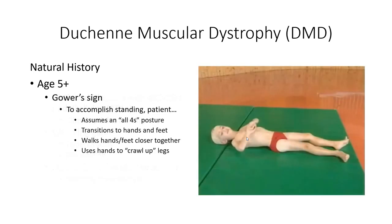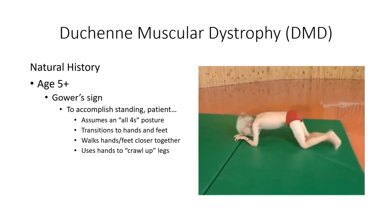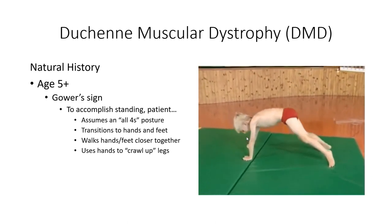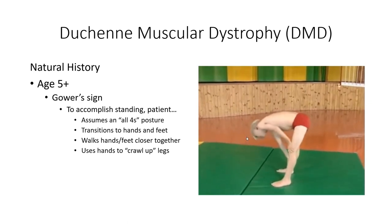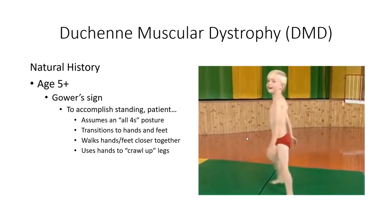As weakness progresses, patients will develop characteristic strategies to compensate for strength loss. For example, a common strategy has been observed to transition from a lying to standing position, and is referred to as Gower's sign. Starting from a supine position, patients will roll to a prone position and transition to their hands and knees. Using their hands to stabilize their base, the patient will transition from knees to feet, one leg at a time. From here, the patient will either move their feet forward or their hands backwards to bring their hands and feet closer together, then walk their hands up their legs to establish a standing position.